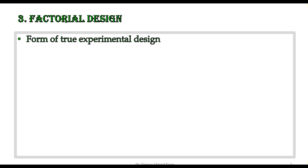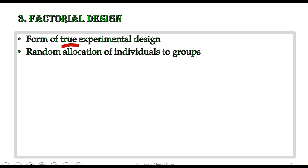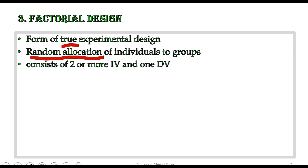Factorial design is a form of true experimental design, and because of being a true experimental design it fulfills its conditions, which basically involve random allocation of individuals to different groups. Factorial design, being an experimental design, deals with variables — specifically independent and dependent variables. What is so special about factorial design is its unique feature.